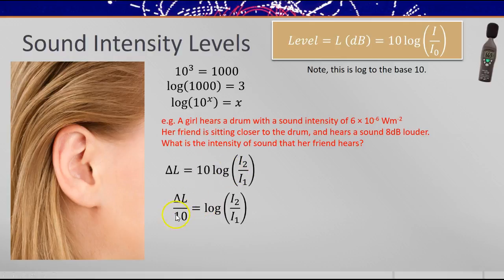If we divide both sides by 10, we get this. And then if we take the inverse of the log function, that's raising something to the power of 10, we get this. 10 to the power of this lot is equal to I₂ over I₁. So we can use that formula to work out the new intensity, or the intensity that her friend would hear if she was hearing a sound 8 decibels louder.